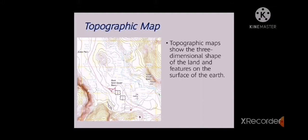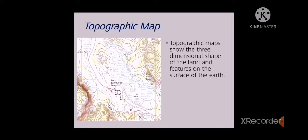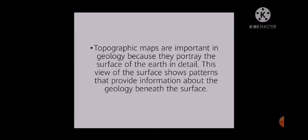These are the other types of maps. A topographic map shows three-dimensional shape of the land and features on the surface of the earth. Topographic maps are important in geology because they portray the surface of the earth in detail. These maps are also used by hikers, planners who make decisions on zoning and construction permits, government agencies involving land, using planning and hazard assessments, and of course, civil engineers.